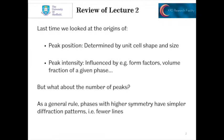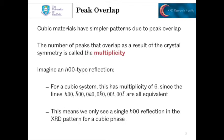If you take the example of a cubic pattern, collect it over a certain range, you might get 10 peaks. For a monoclinic phase, collect the diffraction pattern over the same range, you might have 100 peaks of much weaker intensity. The reason for this is peak overlap. Cubic materials have simpler patterns because of this peak overlap. The number of peaks that overlap as a result of the crystal symmetry is called the multiplicity, or peak multiplicity.